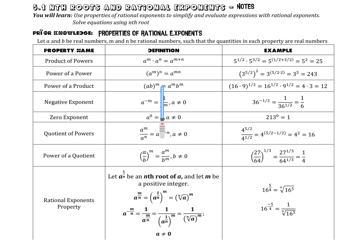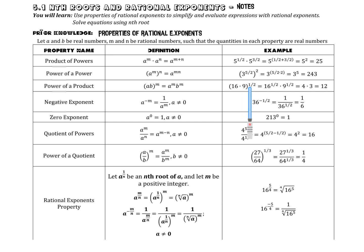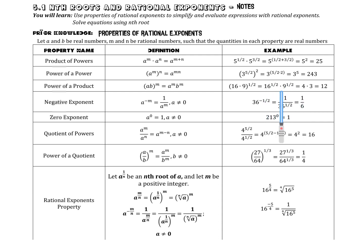If we have a power outside, everything inside gets that power. So a times b to the power of m means a gets that exponent and b gets that exponent. For example, 16 times 9 to the power of 1/2 means 16 gets the exponent 1/2 and 9 gets the exponent 1/2. Something to the power of 1/2 is the same as taking the square root, so the square root of 16 is 4, the square root of 9 is 3, giving us 12.